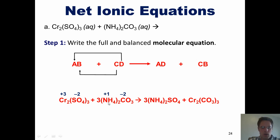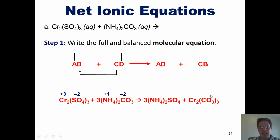When we do the partner swap, we have ammonium — cation C — get together with sulfate — anion B — giving us ammonium sulfate. Separately, chromium — cation A — gets together with carbonate — anion D — and we write chromium carbonate. We'd better make sure we write the correct subscripts in the right places.